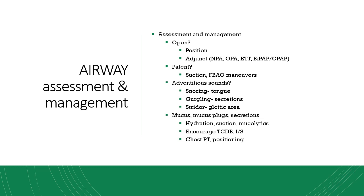If there are adventitious sounds, the airway is not patent. Snoring indicates a partial obstruction by the tongue — positioning like head tilt, chin lift, and/or insertion of an oral airway will alleviate this. Gurgling occurs when secretions such as saliva, vomit, or blood accumulate in the posterior pharynx. Thick secretions like thick vomit should be removed with a finger sweep — turn the head to the side or roll the patient on their side, allow gravity to help it drain out and sweep it out. Thin secretions can be suctioned out.